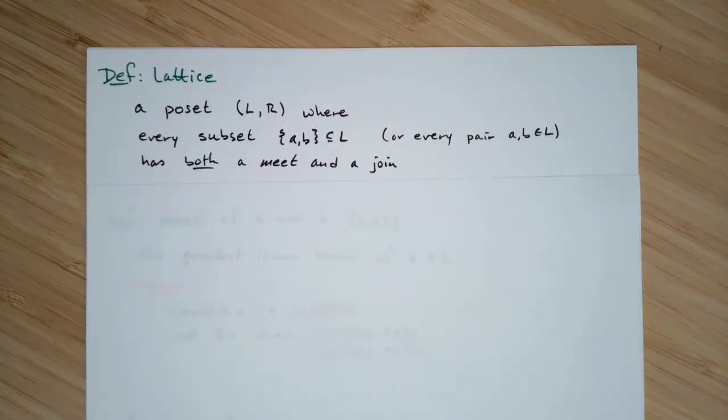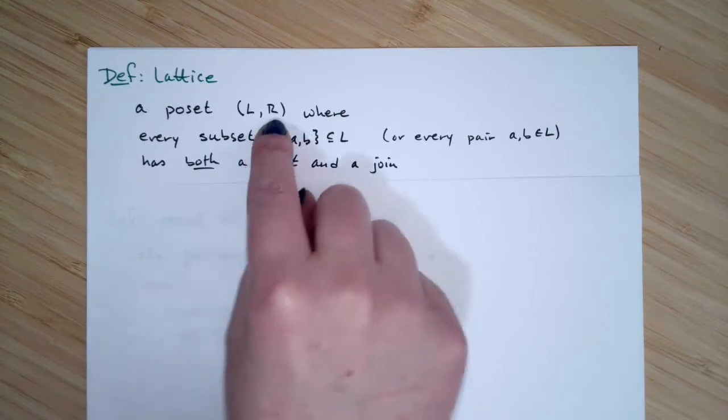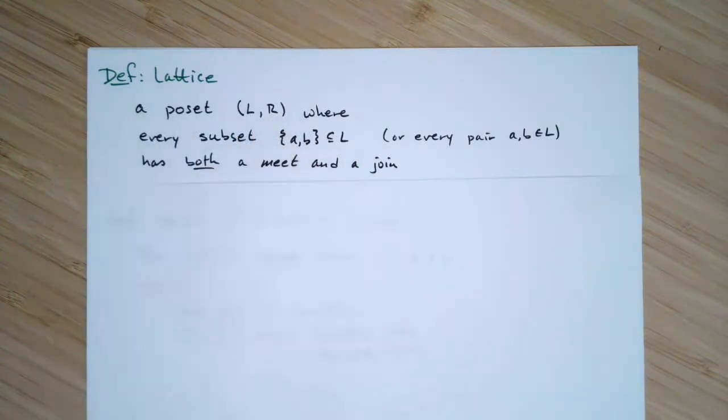So this type of poset, here we'll have our building set, so the actual elements that we care about are from the set L, and the partial order relation that we deal with is R. So first thing is, it's a type of poset.